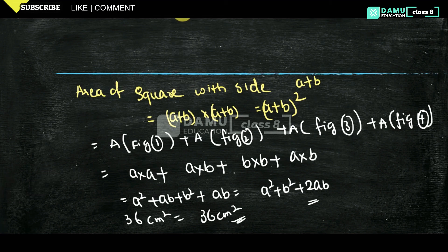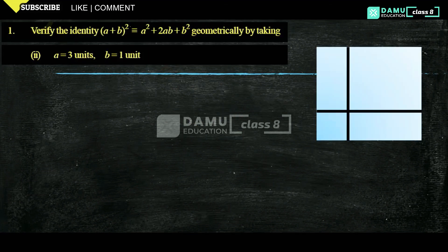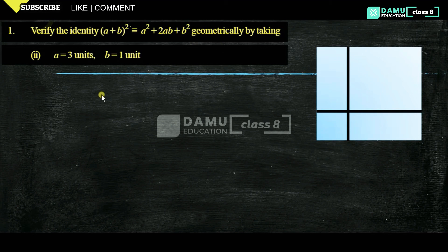Thanks for watching. Please subscribe. Hello viewers, in this module we are going to discuss the second example. Verify the identity (a + b)² = a² + 2ab + b² geometrically by taking a equals 3 units and b equals 1 unit.